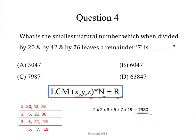If we multiply this 7980 by the smallest integer number which is 1 and add the remainder which is 7, we will get the least number 7987. So here C is our correct answer.